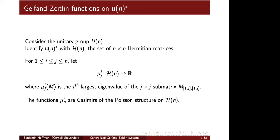Now I'll talk about a specific little k-star — the case when K is the group of unitary matrices. For concreteness I'll identify the dual of u(n) with the set of n-by-n Hermitian matrices. There's a non-degenerate ad-invariant symmetric bilinear form on the Lie algebra, which I use to identify it with its dual. The Lie algebra of the unitary group is skew-Hermitian matrices, and multiplying by i gives Hermitian matrices.